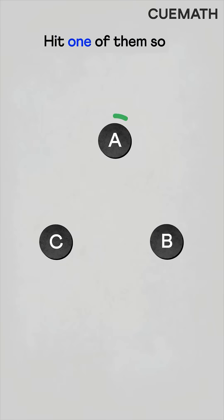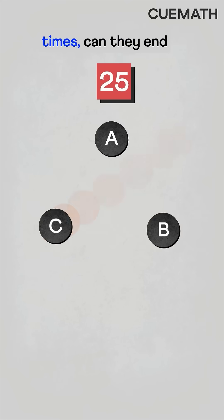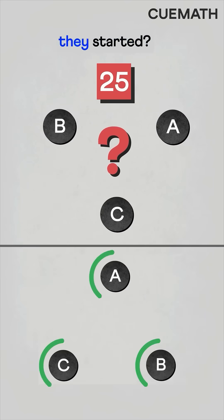We have three pucks. Hit one of them so that it slides between the other two. If we do this 25 times, can they end up exactly where they started?